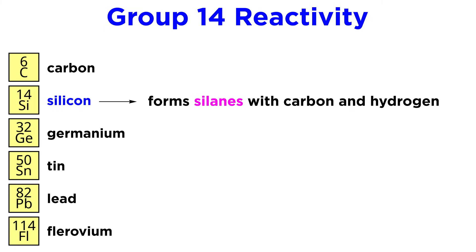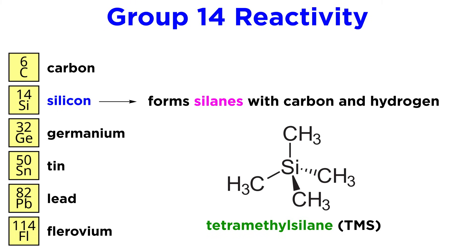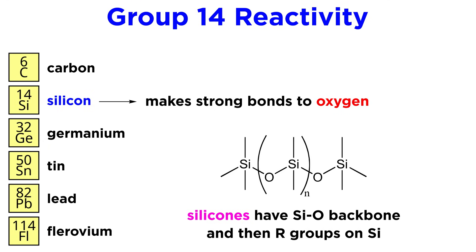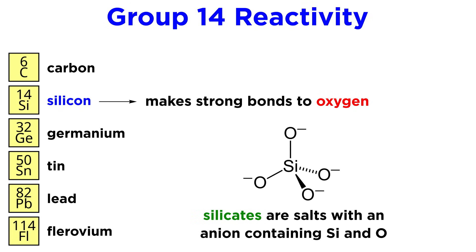Silicon will bond with carbon and hydrogen to form silanes, such as tetramethylsilane, or TMS, which should be familiar from our study of NMR spectroscopy. Like carbon, silicon makes very strong bonds to oxygen, so these are quite common. Silicones are compounds with a silicon-oxygen backbone and R groups attached to the silicon atoms. And silicates are salts in which the anion contains silicon and oxygen. These are abundant in Earth's crust and are studied in detail over in the geology series.